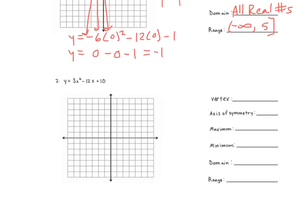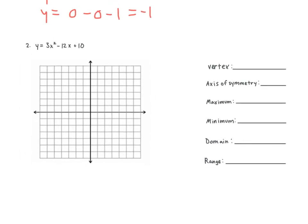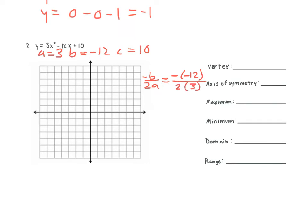Let's go to number two. Is this in standard form or vertex form? Standard. So we need an a, b, and c. What's our a? Three. What's our b? Negative 12. And what's our c? Ten. How do we find our axis of symmetry? Negative b over 2a. So we have negative negative 12 over 2 times 3. So we have 12 over 6, which gives us 2. So our axis of symmetry is x is equal to 2, and our first number in our vertex is 2.